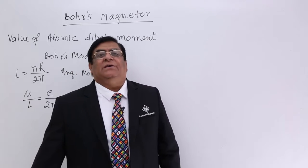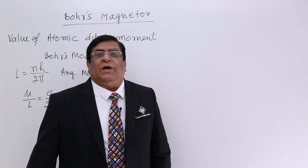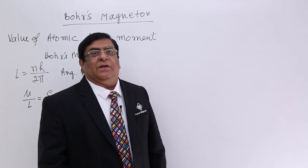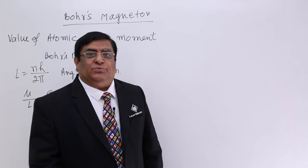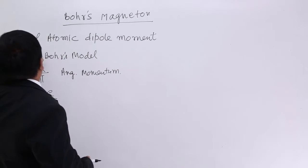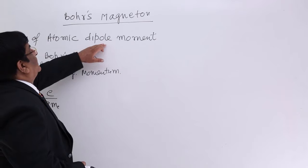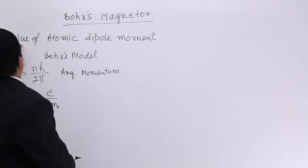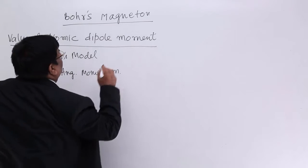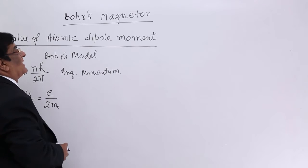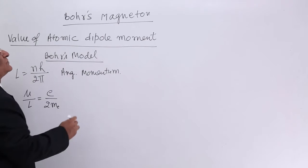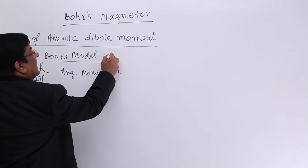Each atom should have a magnetic dipole moment, and that is true — we can find it. Can we find out the value of the magnetic dipole moment of each atom? The answer is yes, and for that we go to Bohr's model of the atom.